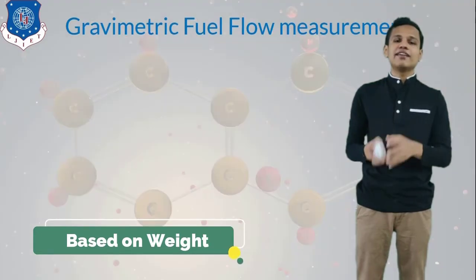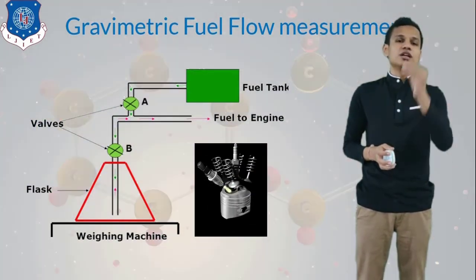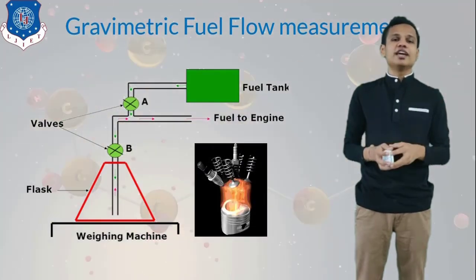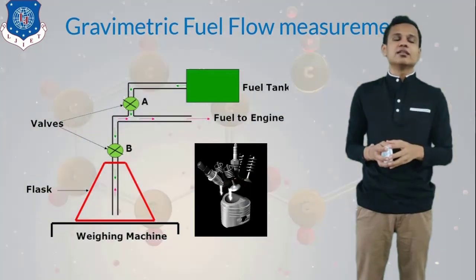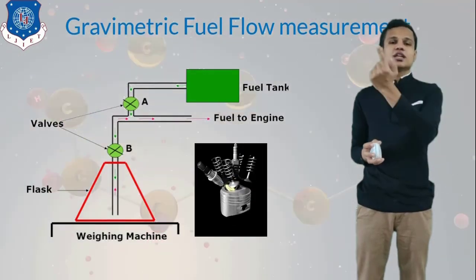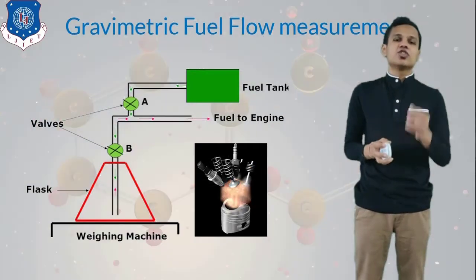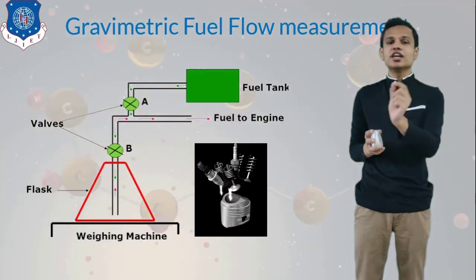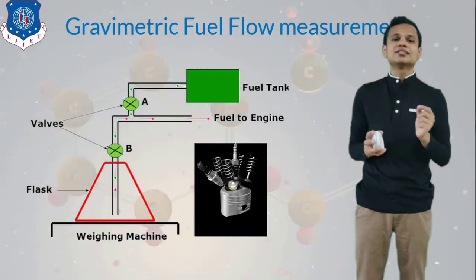In the second method — gravimetric fuel flow measurement — a flask placed on a weighing machine receives fuel from the fuel tank. The weighing machine records the weight of fuel filled. After filling is complete, valve A is closed and valve B is opened, supplying fuel from the flask to the engine. The time for consuming the measured quantity of fuel is recorded, giving fuel consumption in kilograms per second.